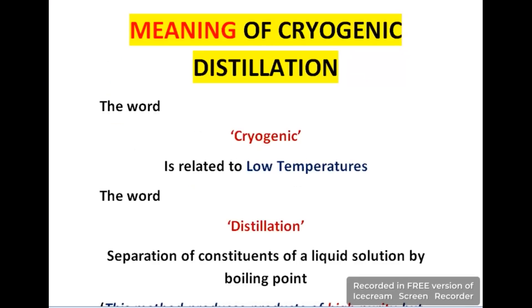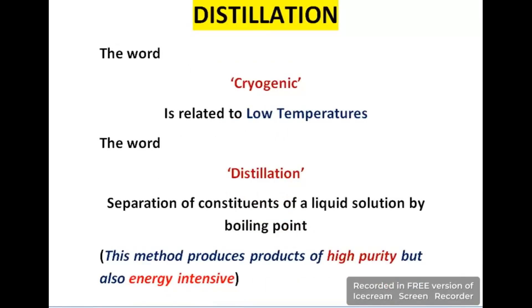Meaning of cryogenic distillation: before proceeding, you must know the meaning of these two words. Cryogenic means low temperature, and distillation is a process in which we separate a liquid solution at its boiling point. This process produces high purity products but it is energy intensive, meaning high energy is required.